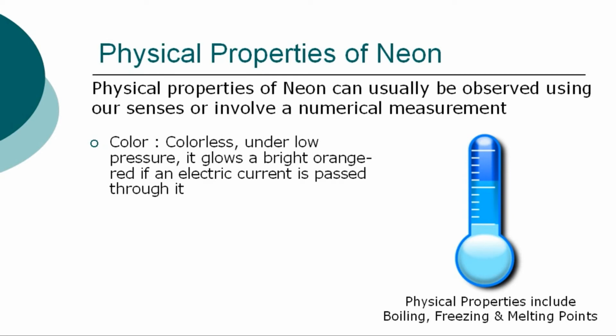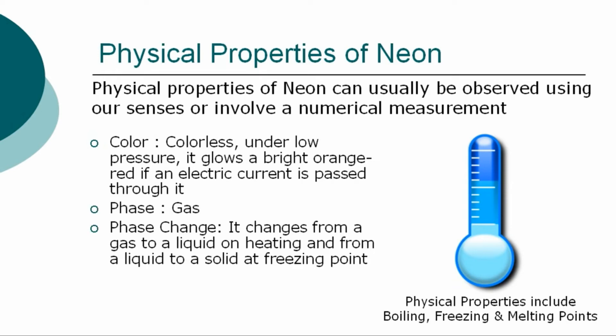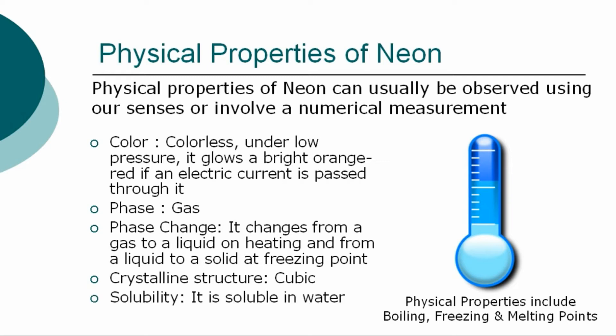The physical properties of neon are: color — colorless under low pressure, it glows a bright orange-red if an electric current has passed through it; phase — gas; phase change — it changes from a gas to a liquid on heating and from a liquid to a solid at freezing point; crystalline structure — cubic; solubility — it is soluble in water.